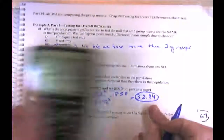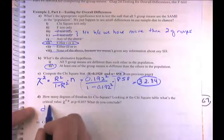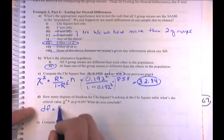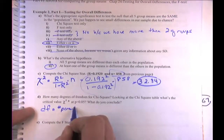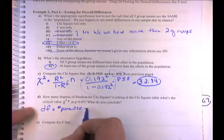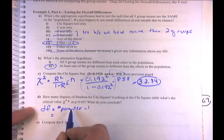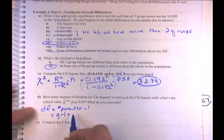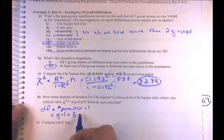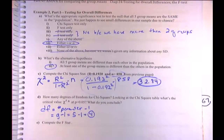The degrees of freedom are the number of parameters minus 1. In this case, it's the number of groups minus 1 — that's g minus 1, which equals 5 minus 1 equals 4.